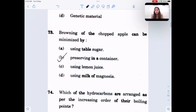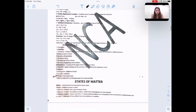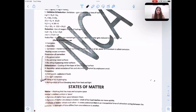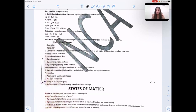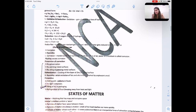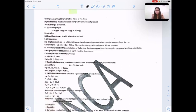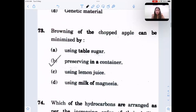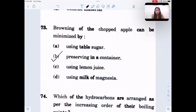Browning of chopped apple can be minimized by - here few methods are given to prevent corrosion, rancidity and oxidation of food. In order to prevent oxidation, it can be preserved in a container.